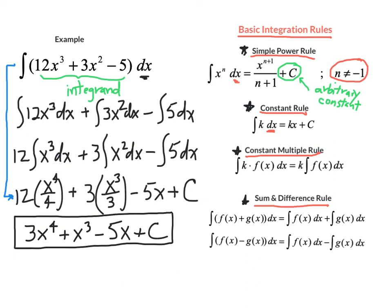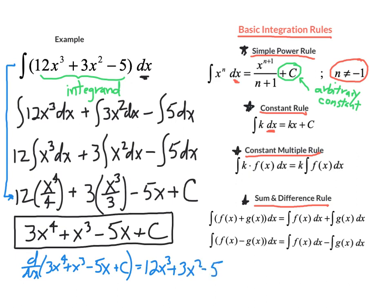If you want to confirm your answer, you can always run a derivative of your antiderivative as your check. If we do that, we see that the derivative of our antiderivative is 12x to the third plus 3x squared minus 5, and the derivative of the constant is 0. We applied all those rules we learned back when we did derivatives — sum and difference rule and all that. And that goes back to our original integrand, which tells us we're correct.